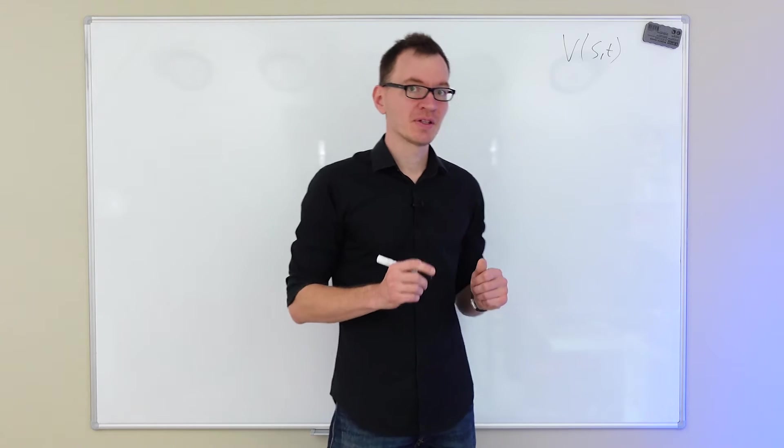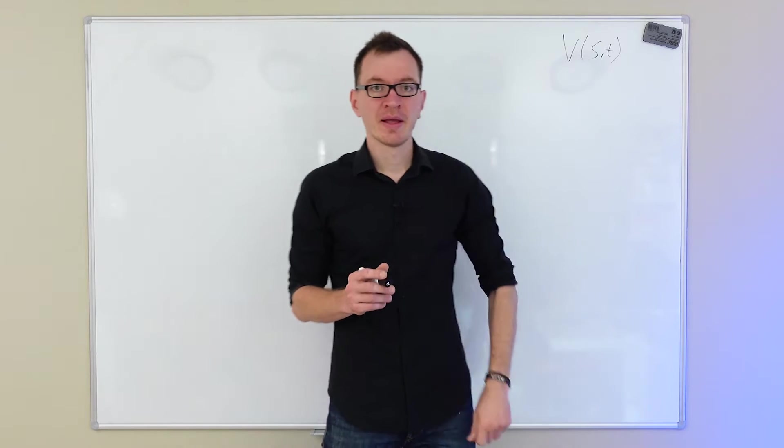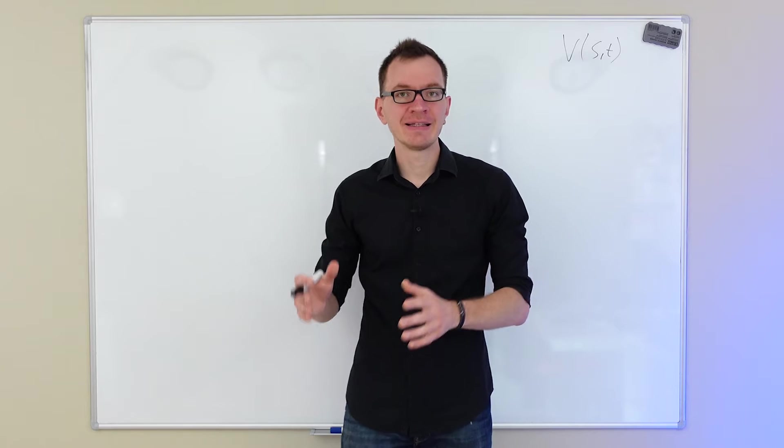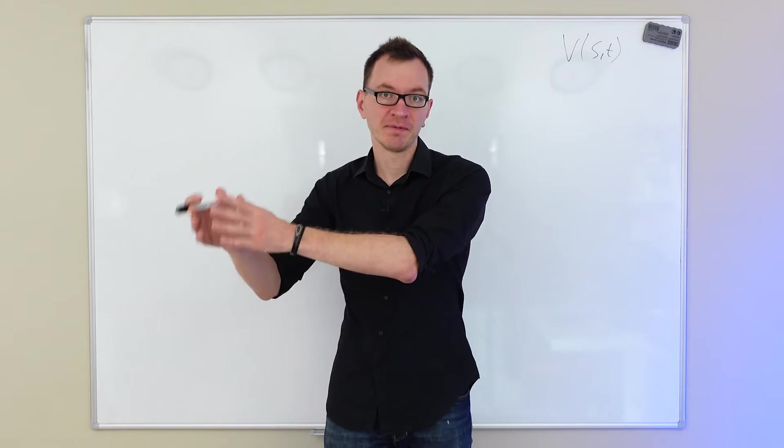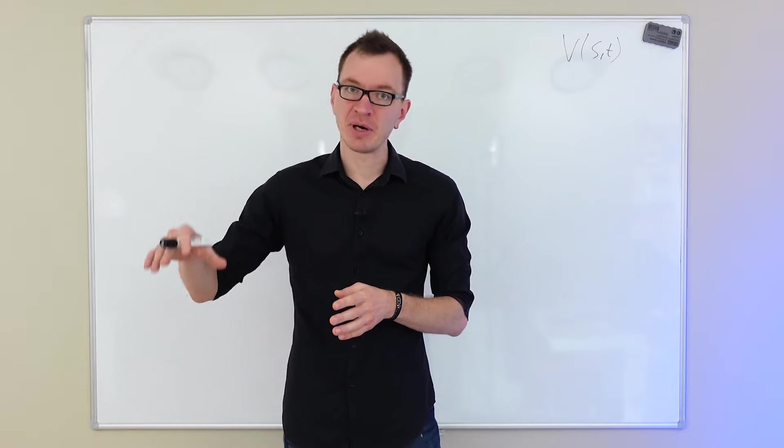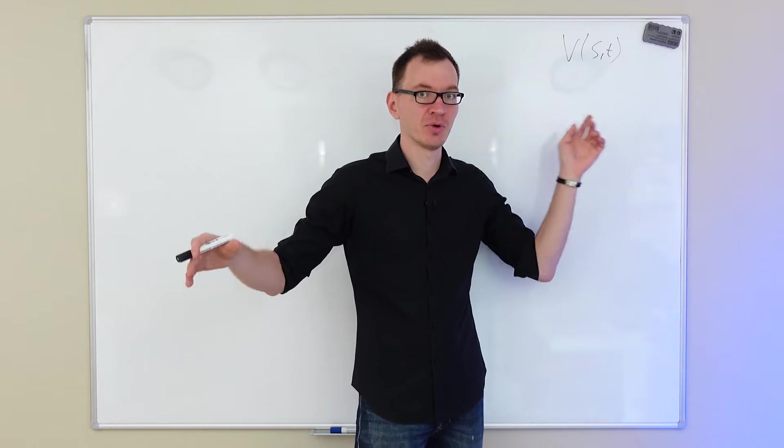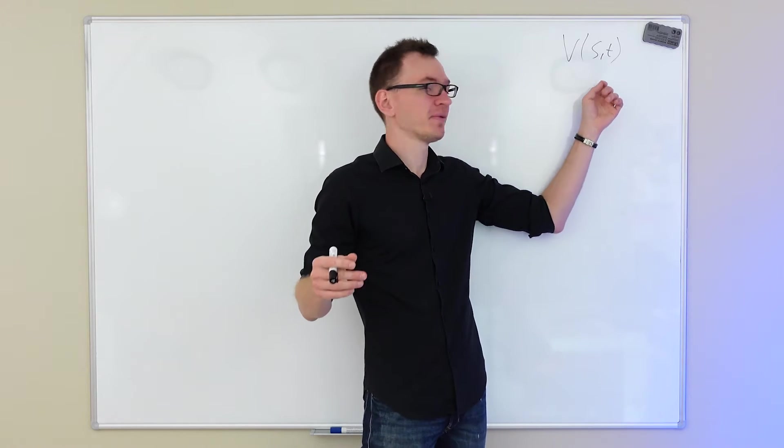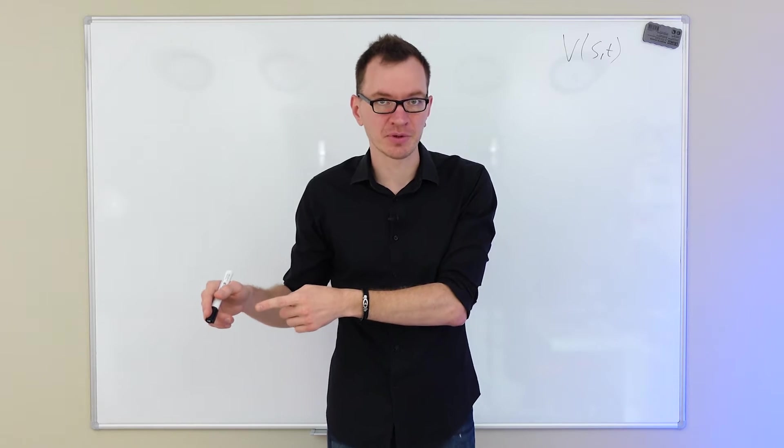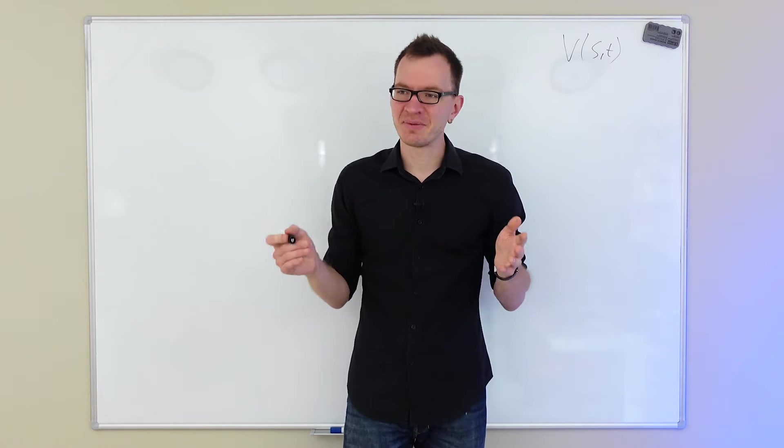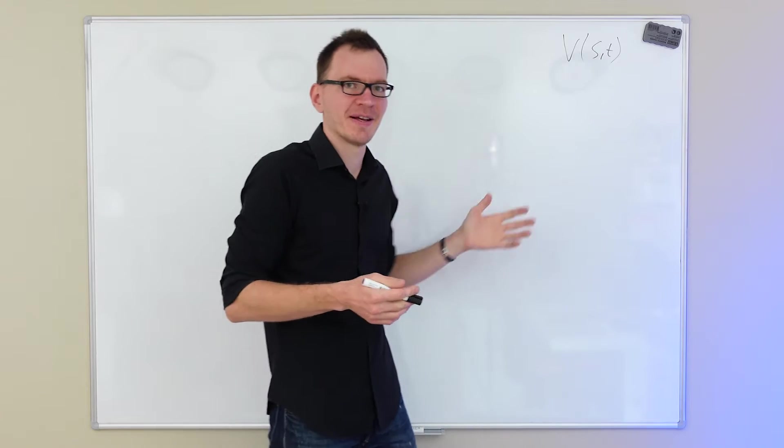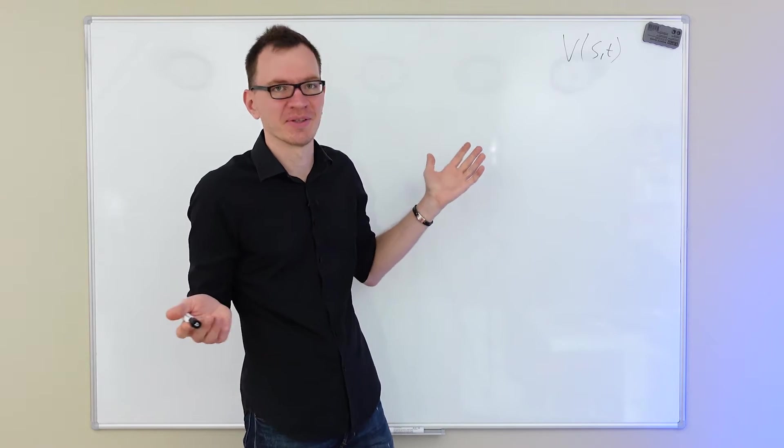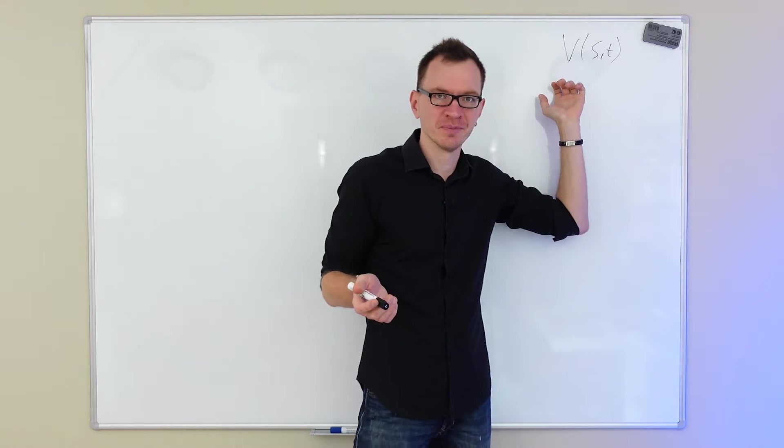What we can do is, we can take this option and try to see if we can find the same exact option traded in the markets. And if we can find such an option, we can see what its price is. And since these two are the same contracts, then the price of this option should be equal to the price of that option. Obviously, it sounds a bit strange, because if we had this exact same option traded in the market, then this whole exercise is a bit pointless, because we already know the price of this option.